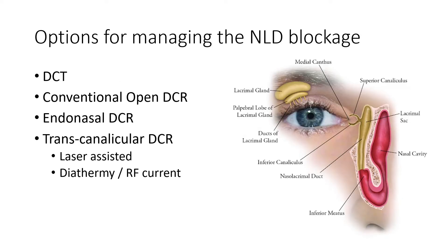Let us look at the options for managing nasolacrimal duct blockage. The most radical option is DCT — dacryocystectomy — which involves removing the whole sac so there is no place for debris from tears to collect, giving the least chance of discharge and acute dacryocystitis. However, removing this structure cuts off drainage completely, leaving the patient with watering but no discharge.